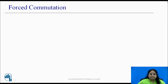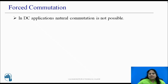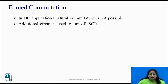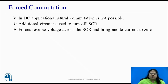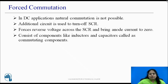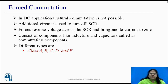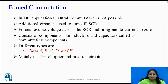Let us now see forced commutation. In DC applications, natural commutation is not possible. Thus, to turn off the SCR in such circuits, additional circuitry is used, known as a commutating circuit. This circuit forces the reverse voltage across the SCR and brings the anode current to zero. The commutating circuit consists of an inductor and capacitor called commutating components. Based on how the commutating components are connected in the circuit and anode current is made zero, forced commutations are classified into different types such as class A, B, C, D and E. Forced commutation is generally used in chopper and inverter circuits.